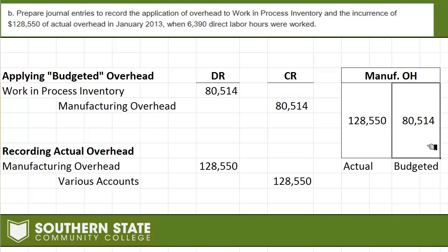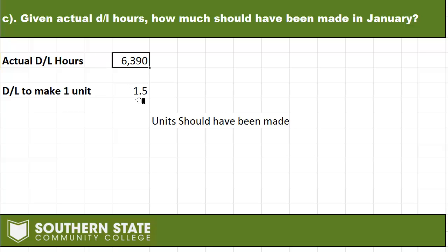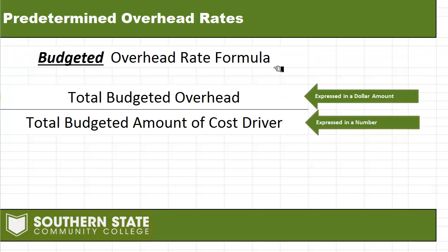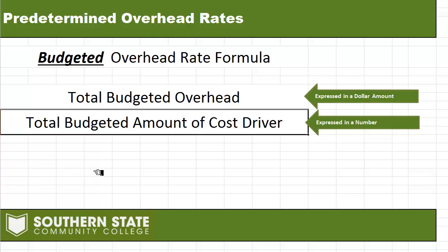In part C, we're given actual direct labor hours of 6,390 and asked how many units should have been made in January. Since it takes one and a half direct labor hours to make one unit, we divide 6,390 by 1.5, which tells us 4,260 units should have been made. The key to this entire problem is the budgeted overhead rate formula: total budgeted overhead in dollars divided by the budgeted cost driver amount to get a per-unit rate.